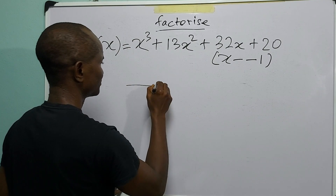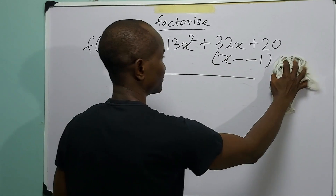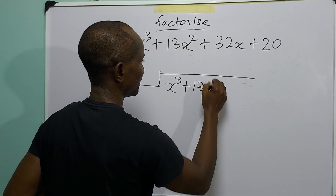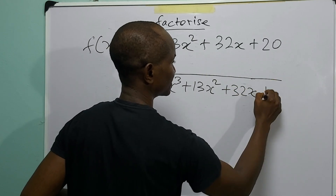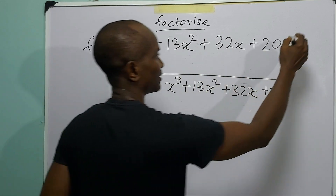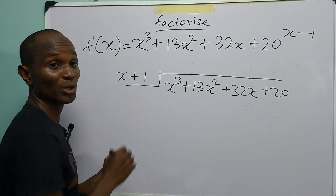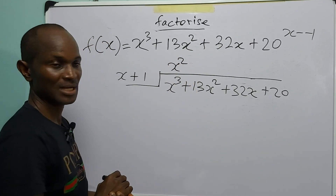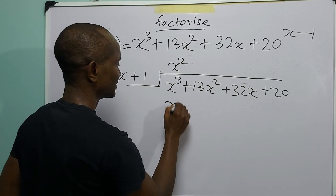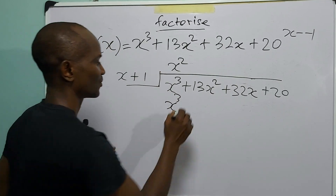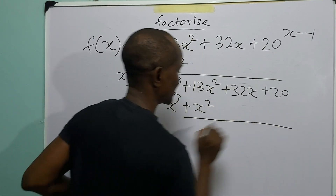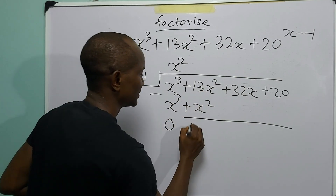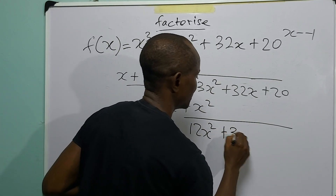We divide x³ + 13x² + 32x + 20 by (x + 1). We begin: x³ divided by x gives us x². Then x² multiplied by (x + 1) gives x³ + x². Subtracting: 13x² minus x² gives 12x². We bring down the remaining terms.